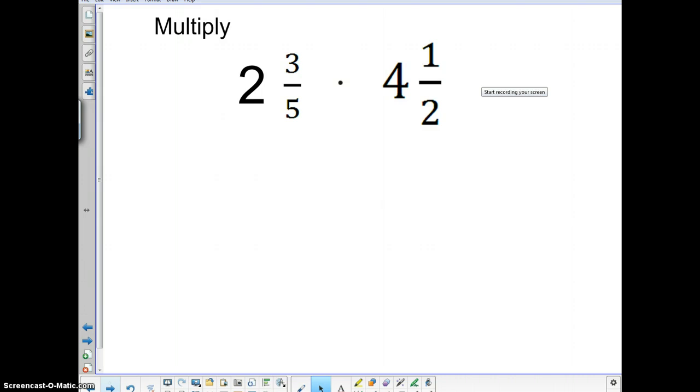This will be our first example. Multiply two and three-fifths times four and one-half. Record that in your notes. This is our first example that we will be completing together. So, like I said before, the first thing that we need to do is do around the horn. Two and three-fifths, what we have to do is two times five is ten plus three is thirteen. So, thirteen over five is our new fraction for two and three-fifths. Same thing over here. We have four times two is eight plus one is nine. So, we have nine over two as our new fraction for four and one-half.